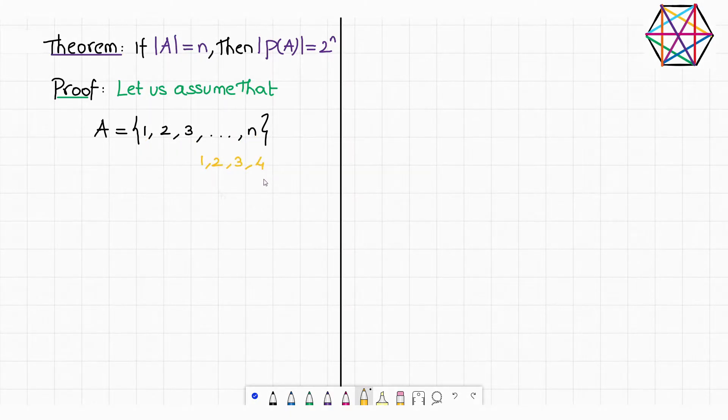So you may choose 1, 2, 3, 4, or you may choose 2, 3, 4, 5, or you may choose 1, 3, 7, 12. So that way, how many different ways we can choose 4 objects out of these given n number of objects? The answer is n choose 4.